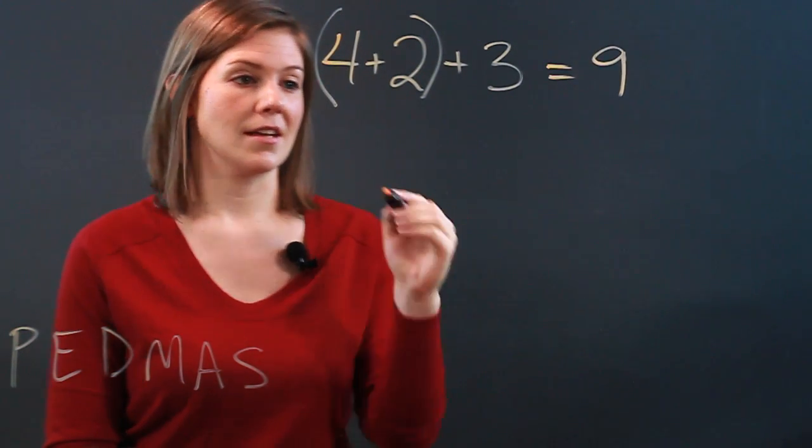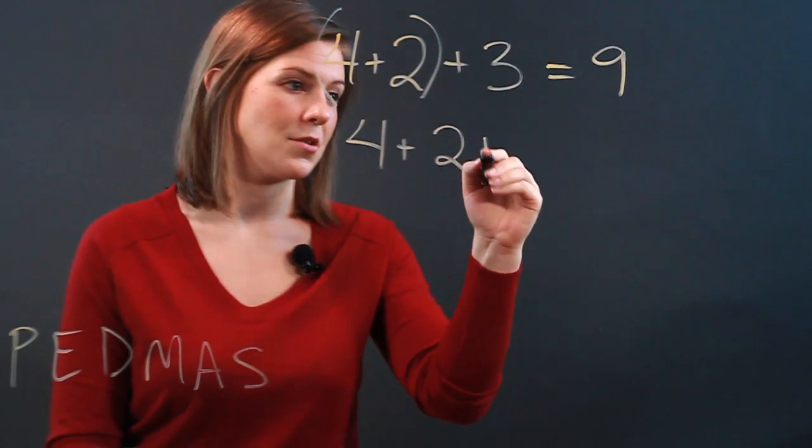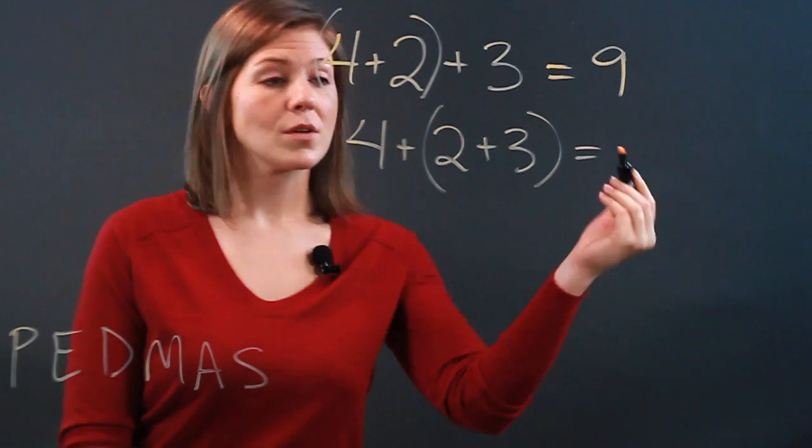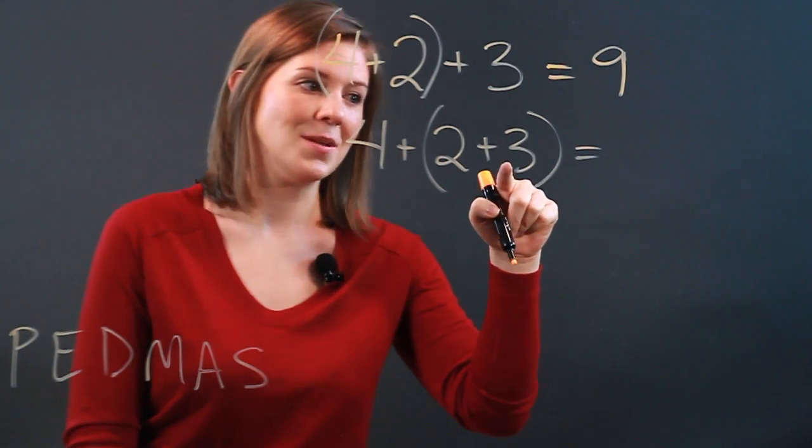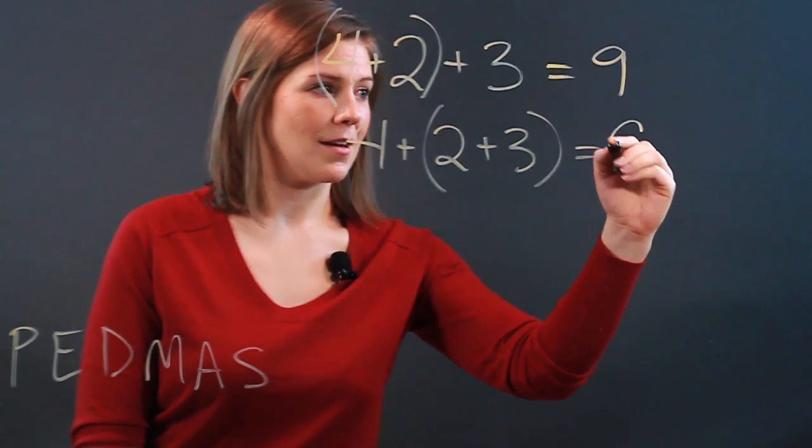The associative property tells us that even if we have 4 plus 2 plus 3 with these in parentheses, we're still going to get 9 because 2 plus 3 is 5 plus 4 is 9.